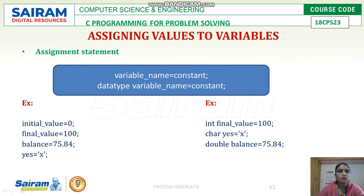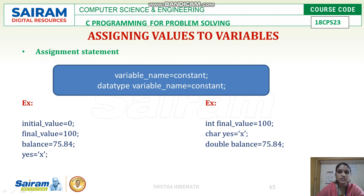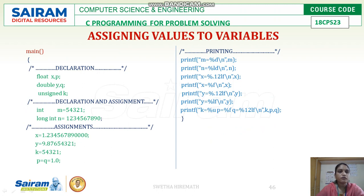Coming to assigning values to a variable, we can use two approaches. First: variable_name = constant — assign the value after declaration. Second: assign the value during the declaration itself. Examples: initial_value = 0; final_value = 100; balance = 78.84; s = x. Alternatively, we can declare variables like 'final_value' and 'balance' and assign constant values at the time of declaration. For instance, float xp, yq, and k — all declared with their respective data type.